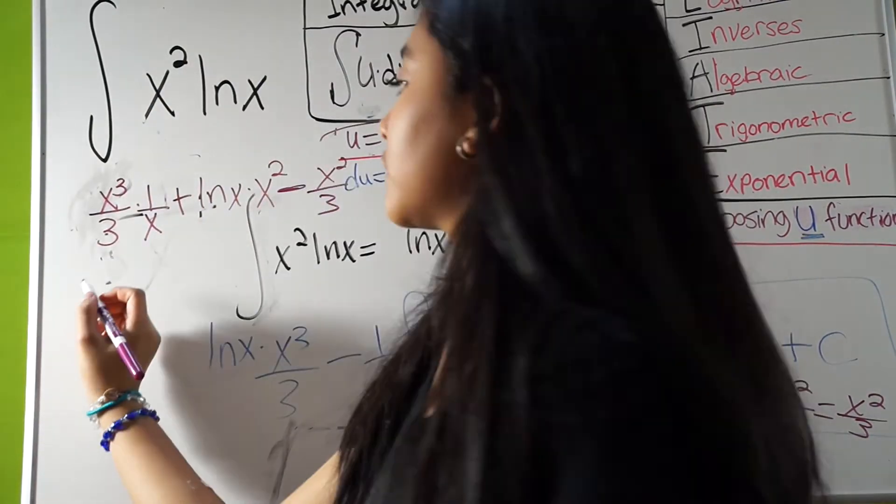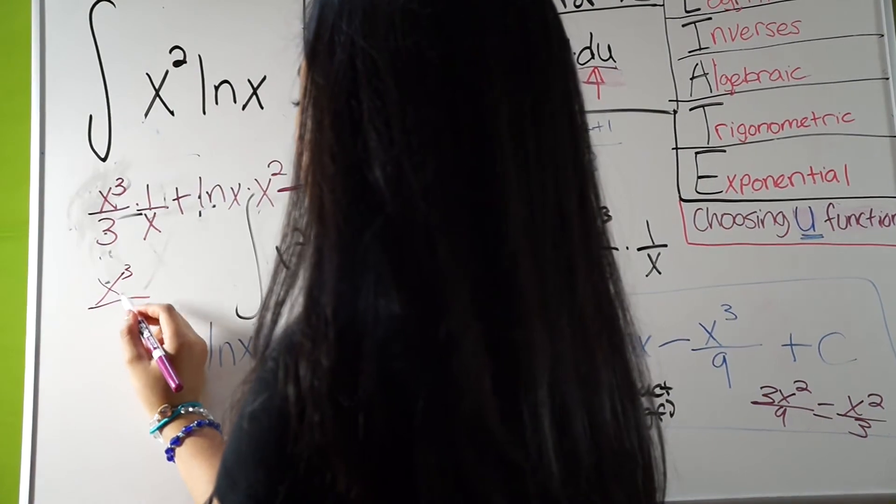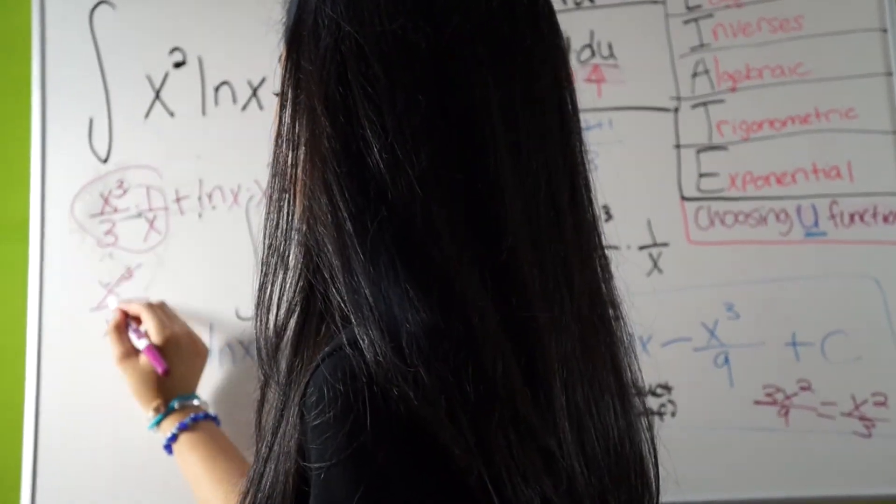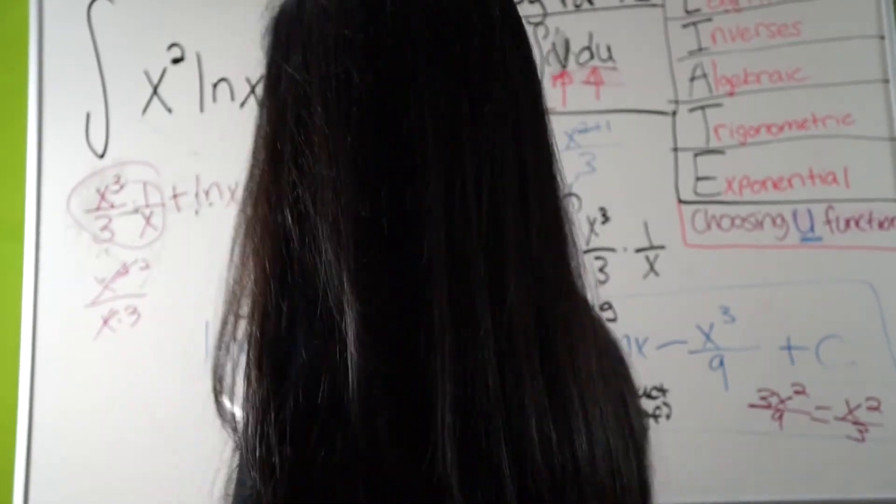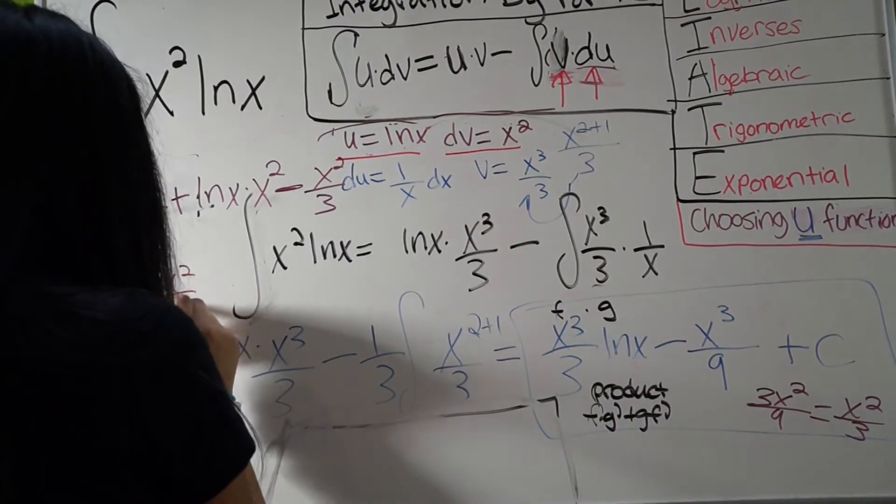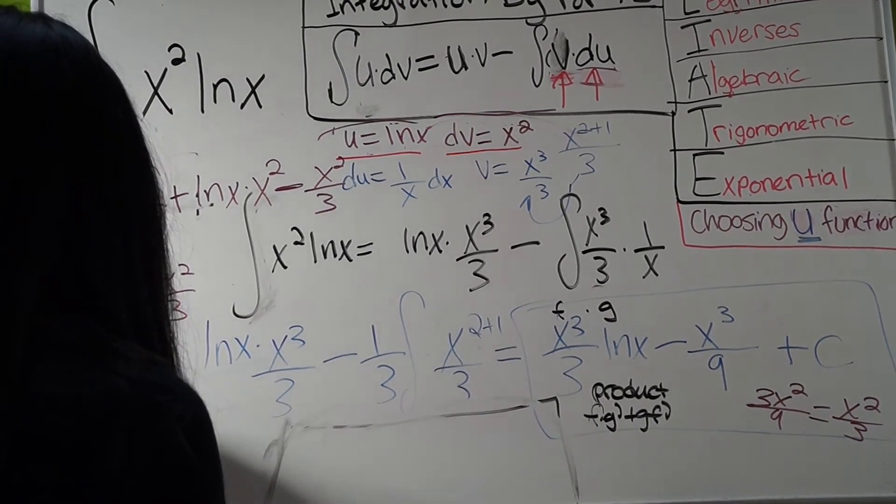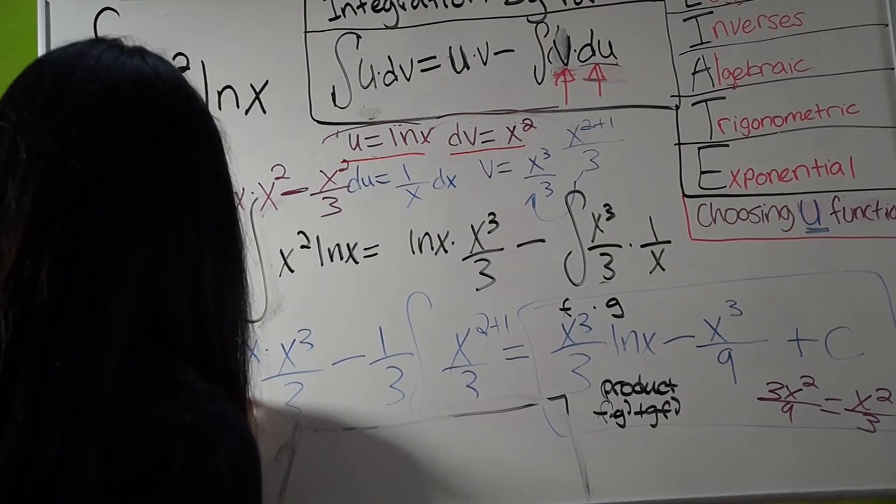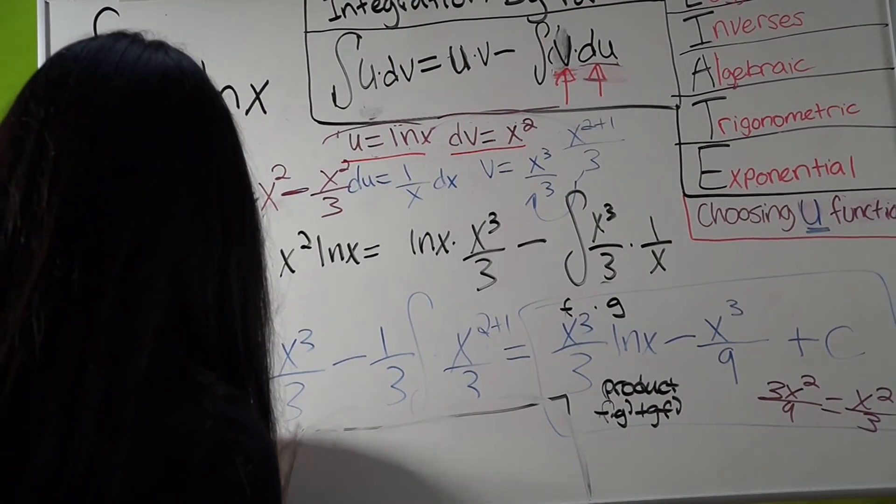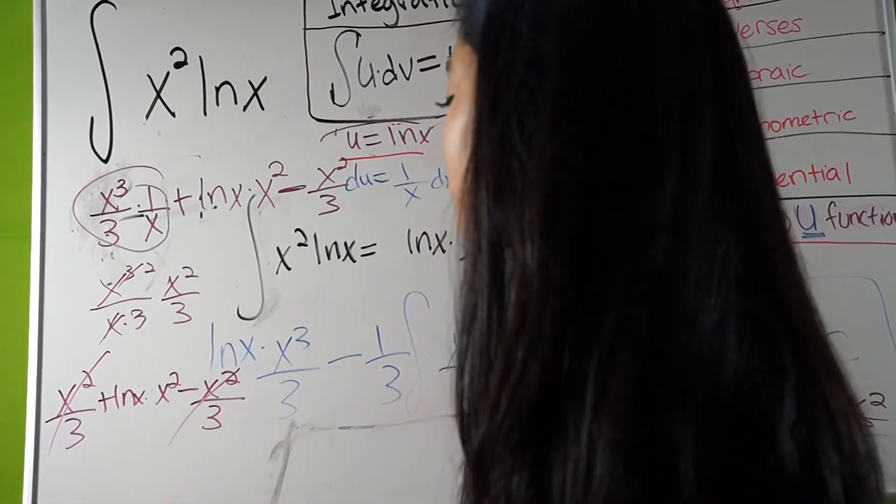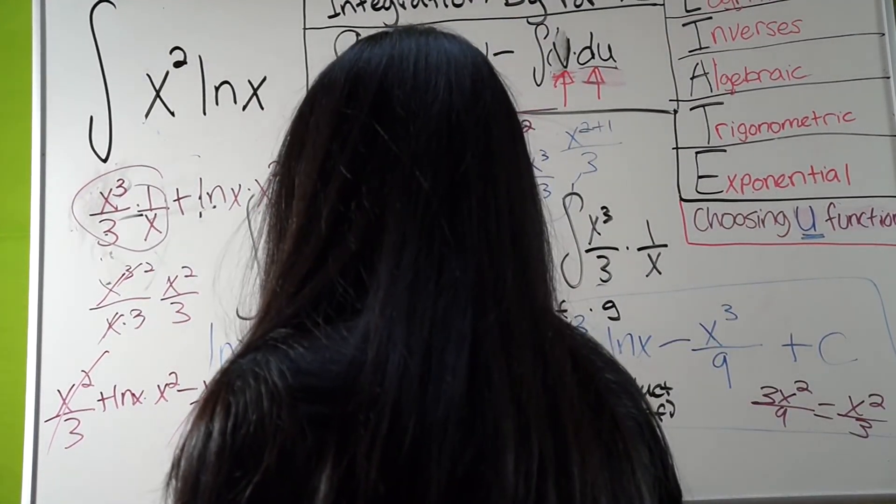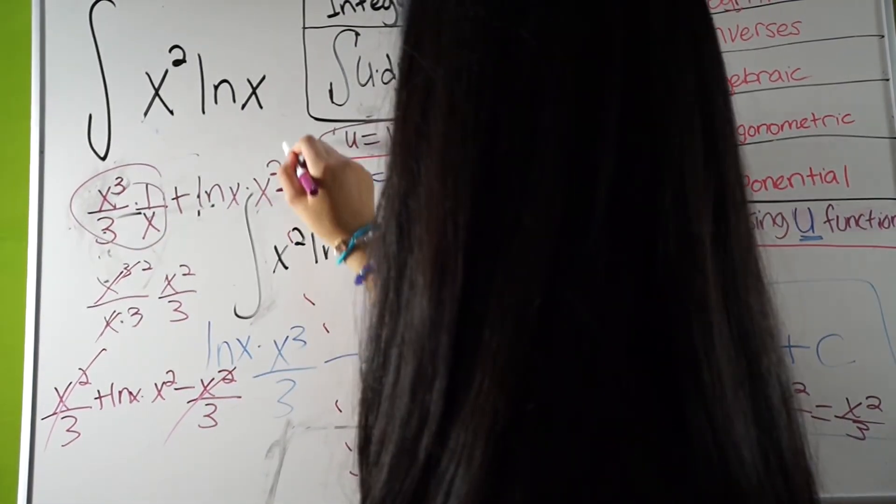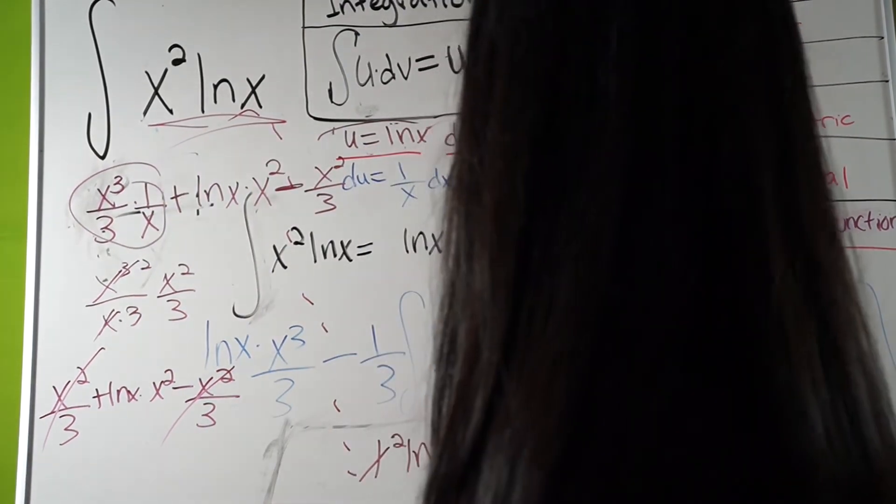So, for this one over here, x cubed all over, actually, if you think about this, this is actually x times 3. So, then you're going to be left with squared. So, it's going to be x squared all over 3. So, now you have x squared all over 3 plus ln x times x squared minus x squared all over 3. Now, over here, you see these terms cancel. So, now you're left with x squared ln x, which is the same as this. So, we're saved.